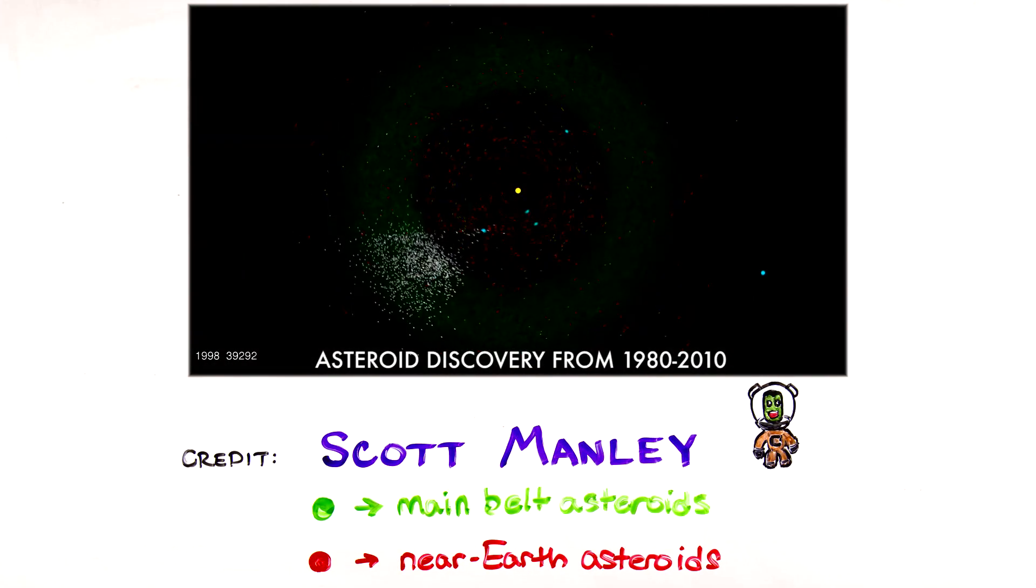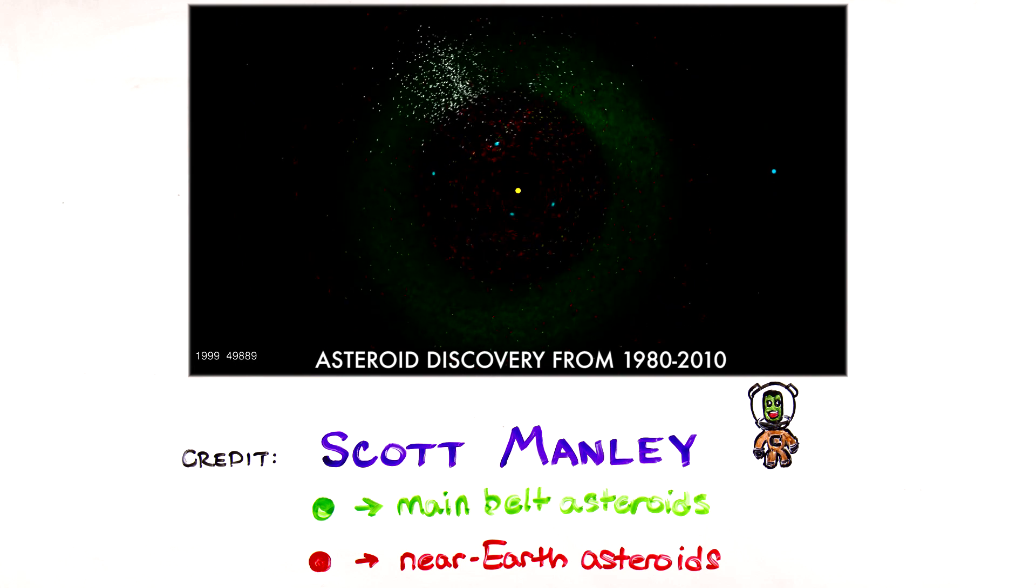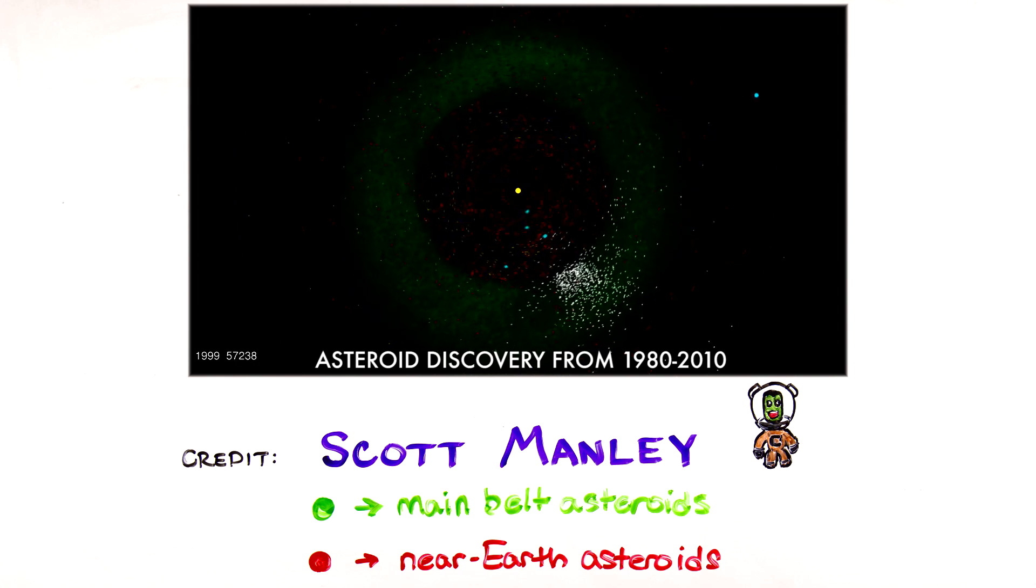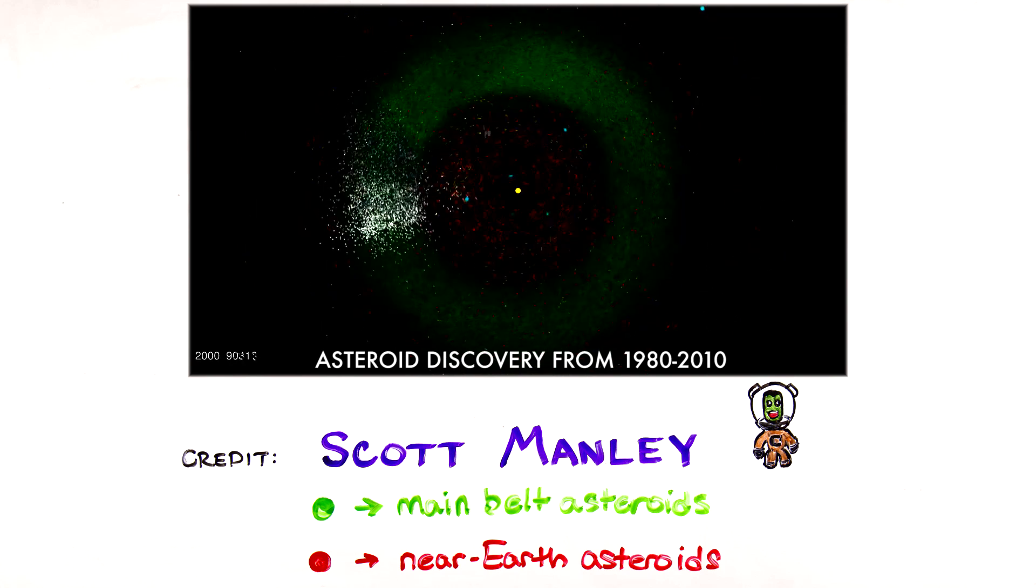And while astronomers don't catch all objects that can impact Earth, observers have found over 600,000 asteroids since 1801. Over 11,000 of these are near-Earth asteroids and about 1,500 are potentially hazardous to Earth.